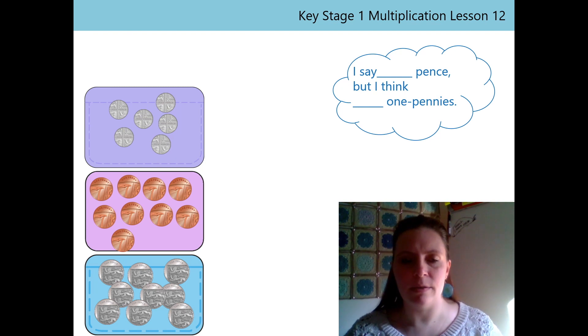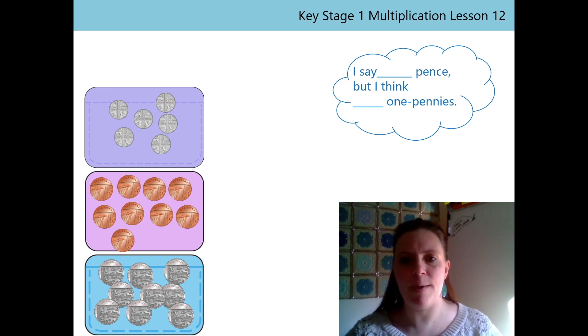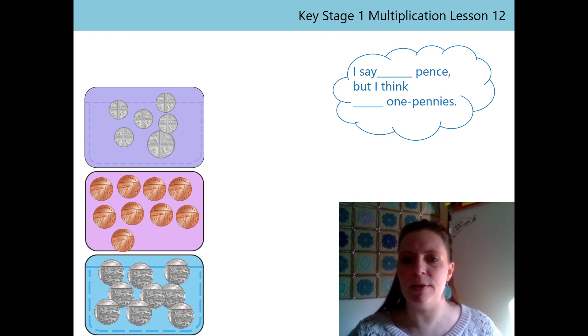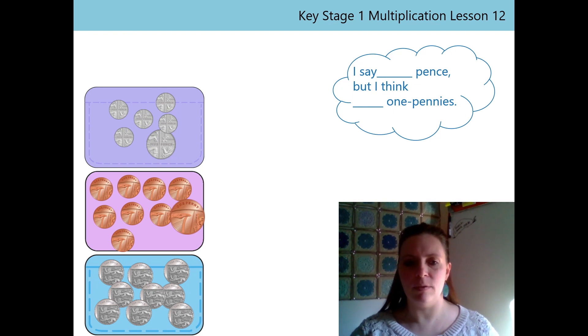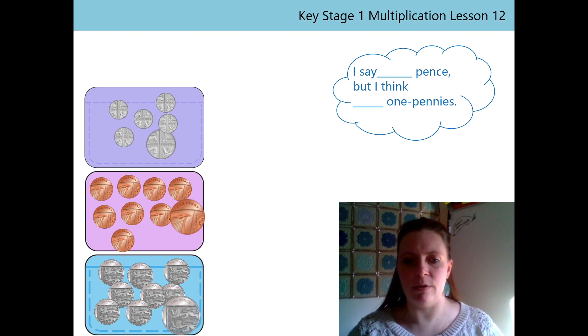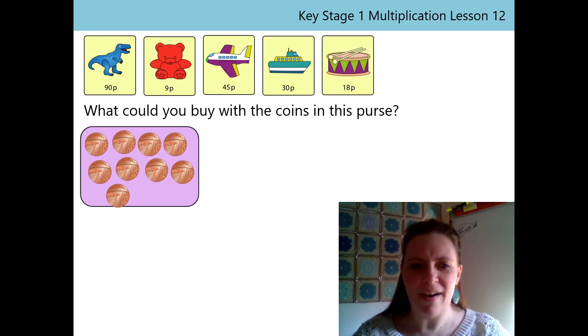Today we're going to be using lots of different coins. I've got some in these purses here. Before we move on to what we're learning today, I thought we could just check quickly that we can remember what the value of each coin. So here I have my 5p coins, and I would like you to say this stem sentence with me. This one is my 1p coin. We don't need to use the sentence for that one. Next, I've got my 10p coin. Let's pop that into the sentence. I say 10p, but I think 10 one pennies. Thanks for that. It'll be helpful. I like learning about money, because it'll help me when I go shopping.